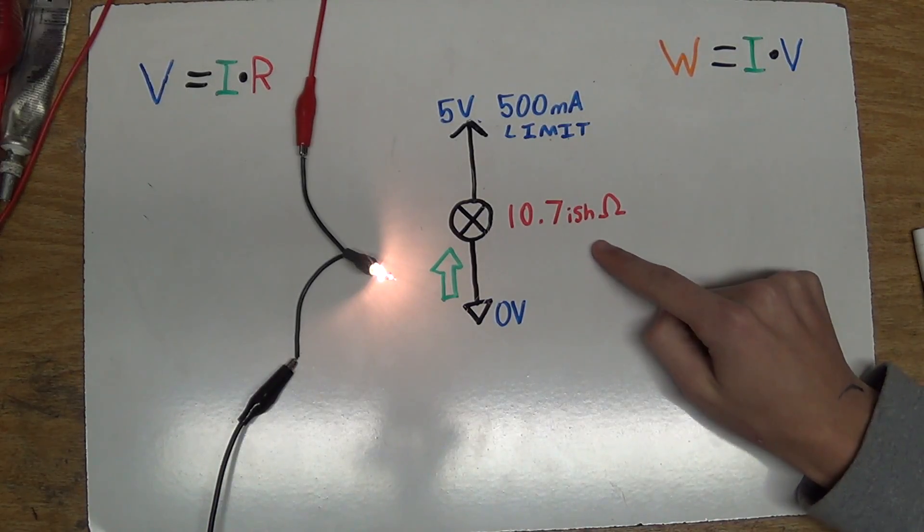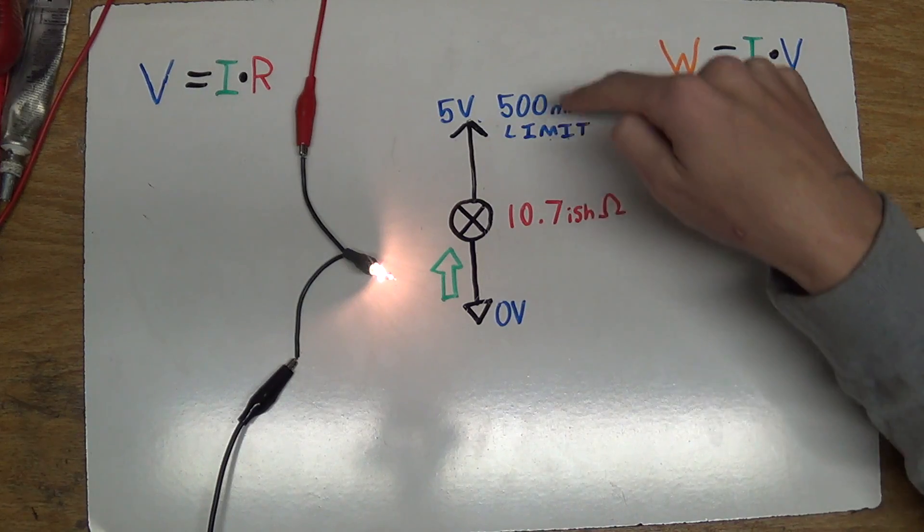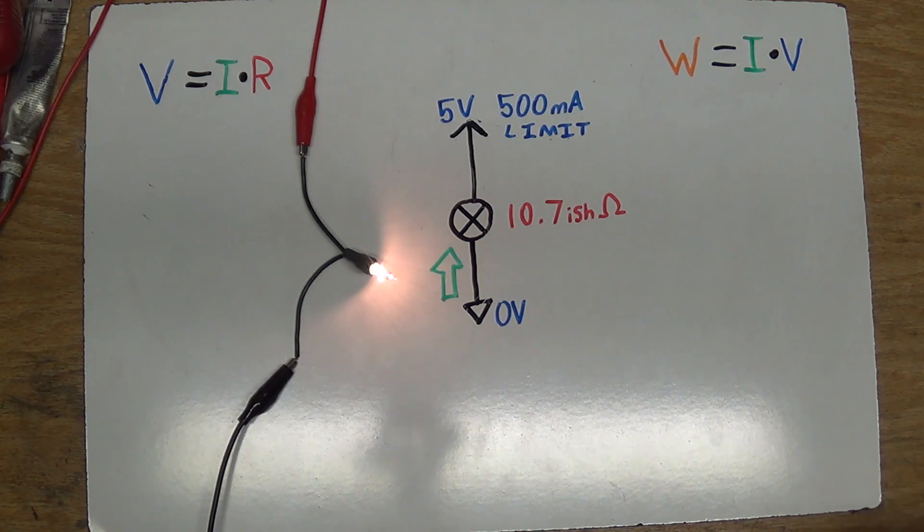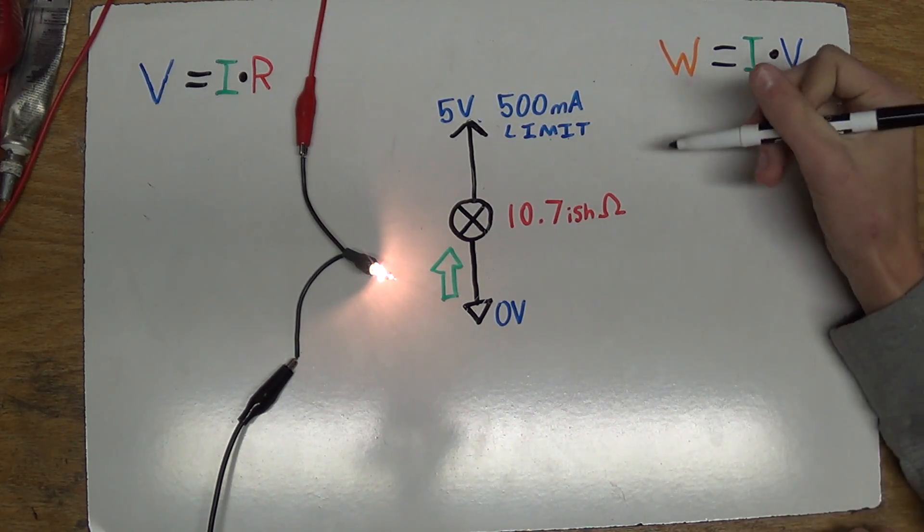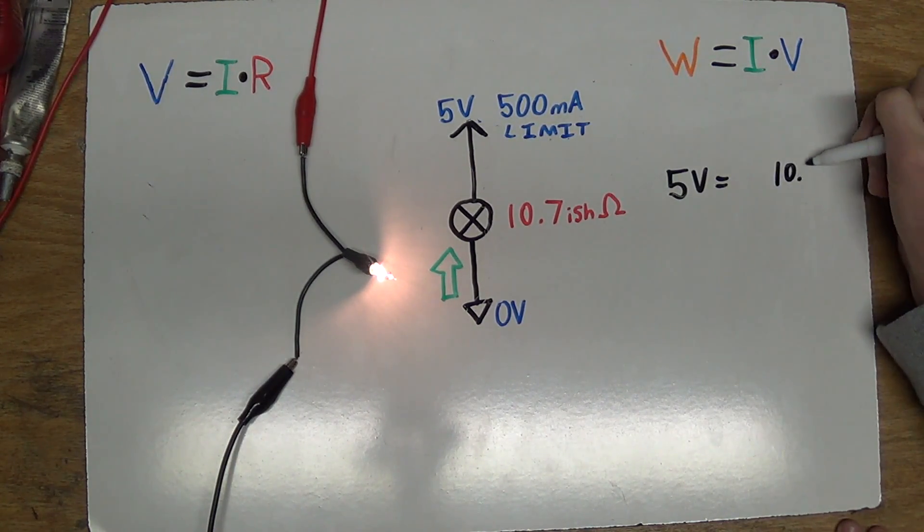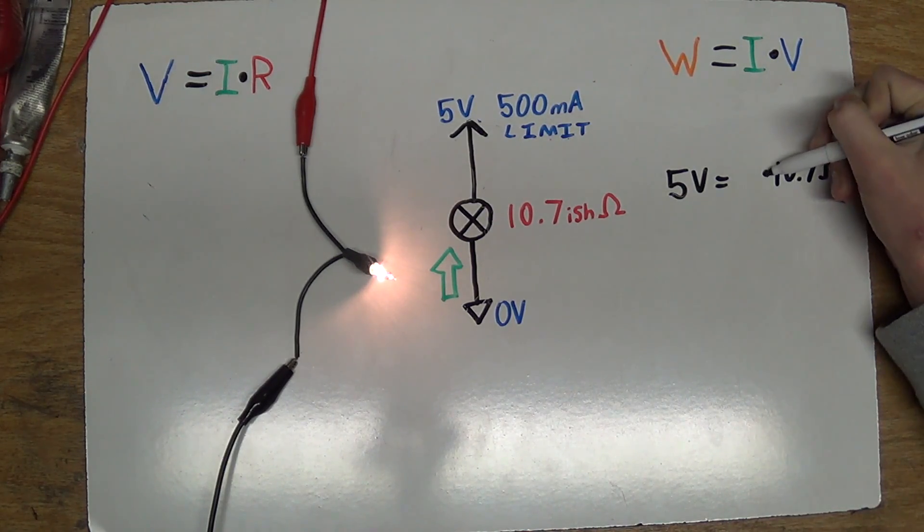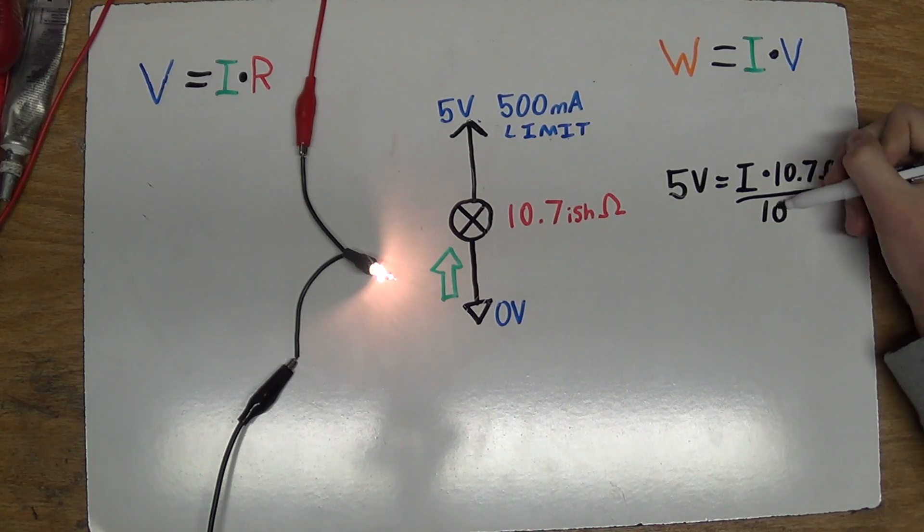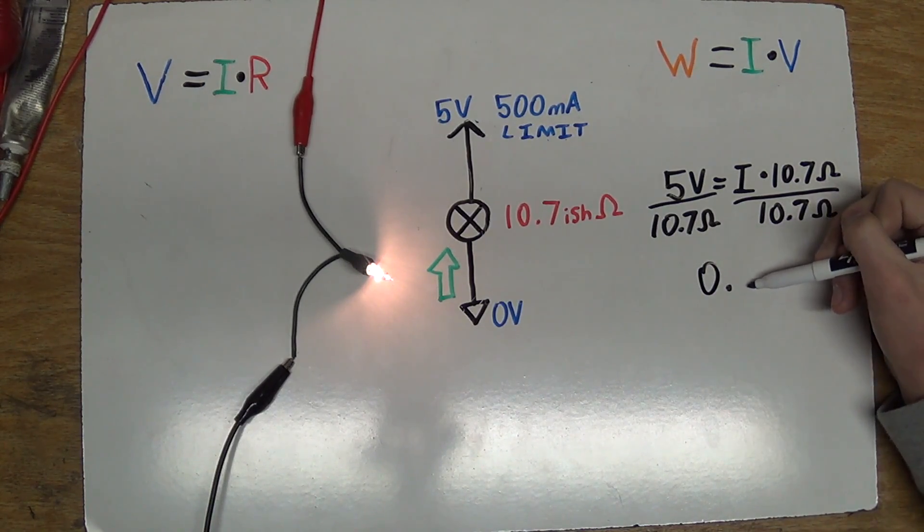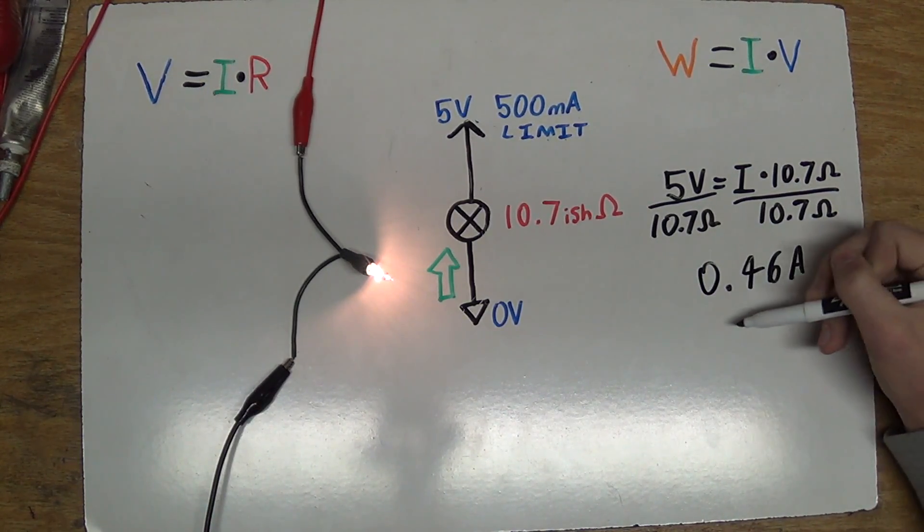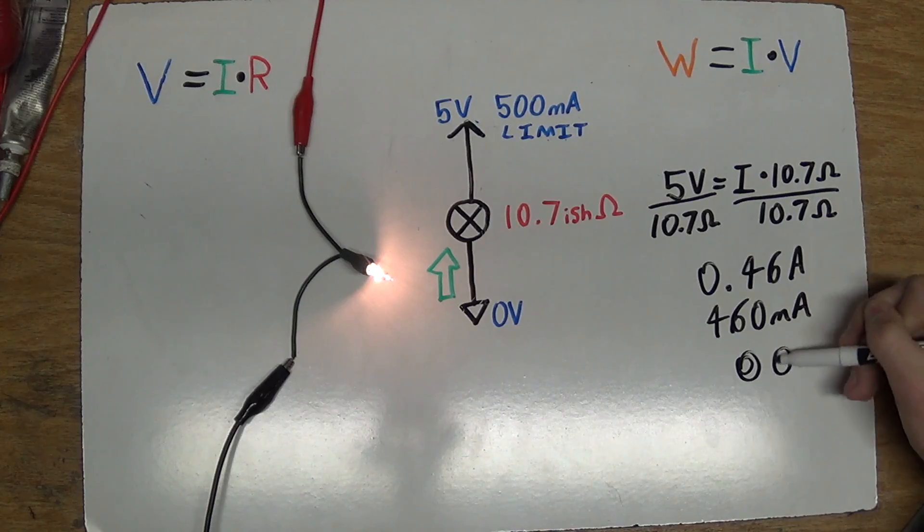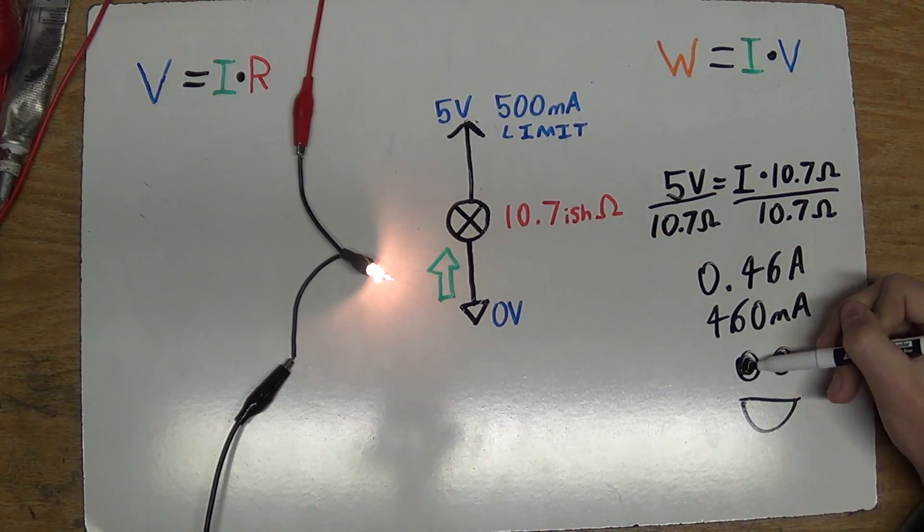Alright, now that we've figured out what the resistance is going to be, let's make sure that we will not be drawing more than 500 milliamps. So like before, we're going to set up our equation, but this time we're going to set it up with 5 volts, and we're going to set our current to 10.7 ohms, and we're going to multiply that to I. Now to solve for this, just divide both sides by 10.7, and I figured out about a current draw of about 0.46 amps, or 460 milliamps. Alright, that's good. It means we won't be burning out our USB port on our computer.